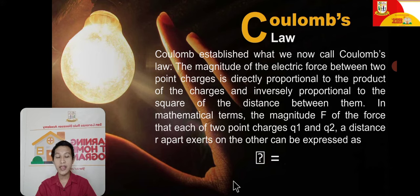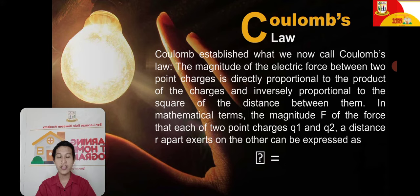Coulomb's Law states that the magnitude of the electric force between two point charges is directly proportional to the product of the charges and inversely proportional to the square of the distance between them. In mathematical terms, the magnitude F of the force that each of the two point charges Q1 and Q2 at distance R exerts on the other is expressed by the formula F = kQ1Q2/R².